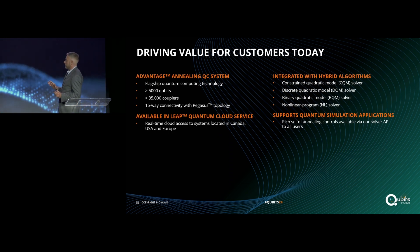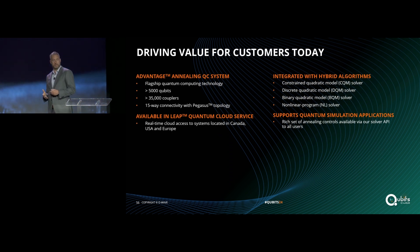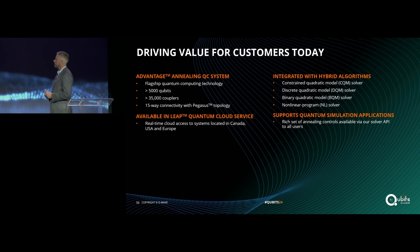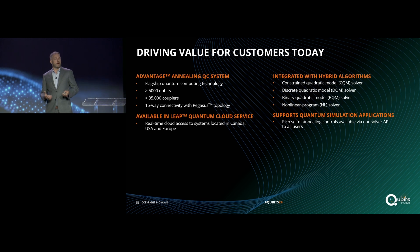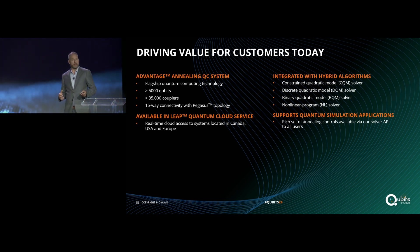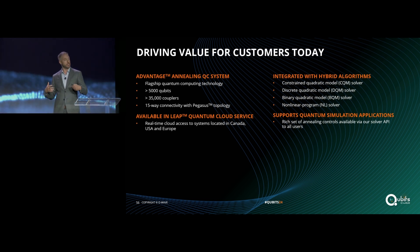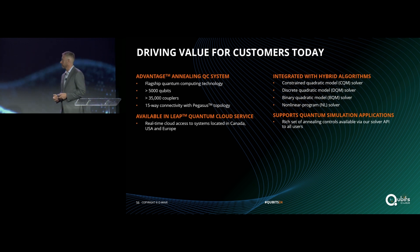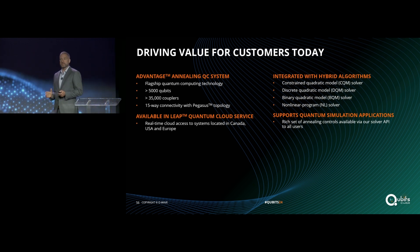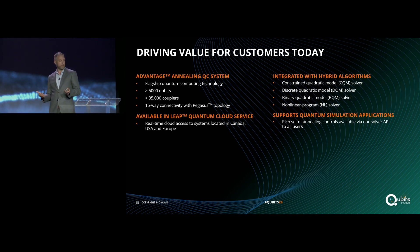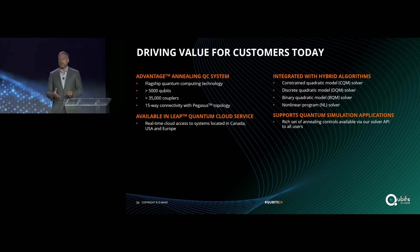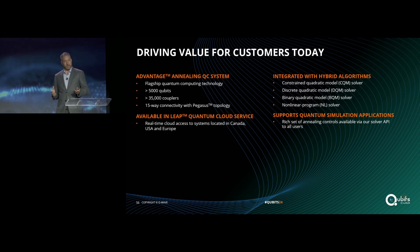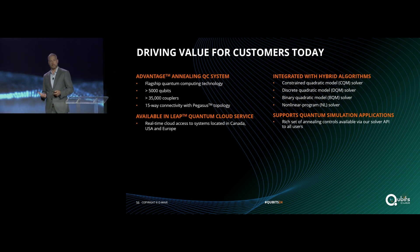Our core technology right now is our Advantage annealing quantum computing system — our fifth generation flagship product. The annealing systems have more than 5,000 qubits, more than 35,000 couplers, and a highly connected topology where each qubit is connected to up to 15 other devices. All three of our Advantage systems are currently available via real-time access in our quantum cloud platform LEAP, with systems located near our research facility in Vancouver, as well as in Germany and California.